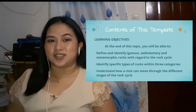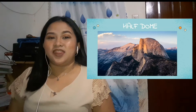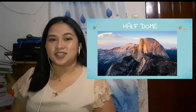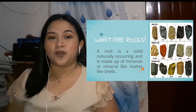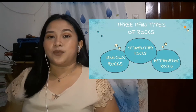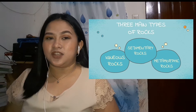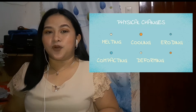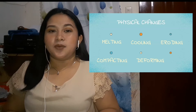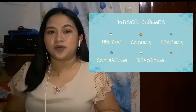Lastly, understand how a rock can move through the different stages of the rock cycle. Rocks make up famous formations like Half Dome, or smaller rock formations seen in canyons — rocks are all around us. A rock is a naturally occurring solid made up of minerals like shells. Rocks can be divided into three basic types depending on how they are formed: igneous, sedimentary, and metamorphic rocks, each formed by physical changes such as melting, cooling, eroding, compacting, or deforming that are part of the rock cycle.